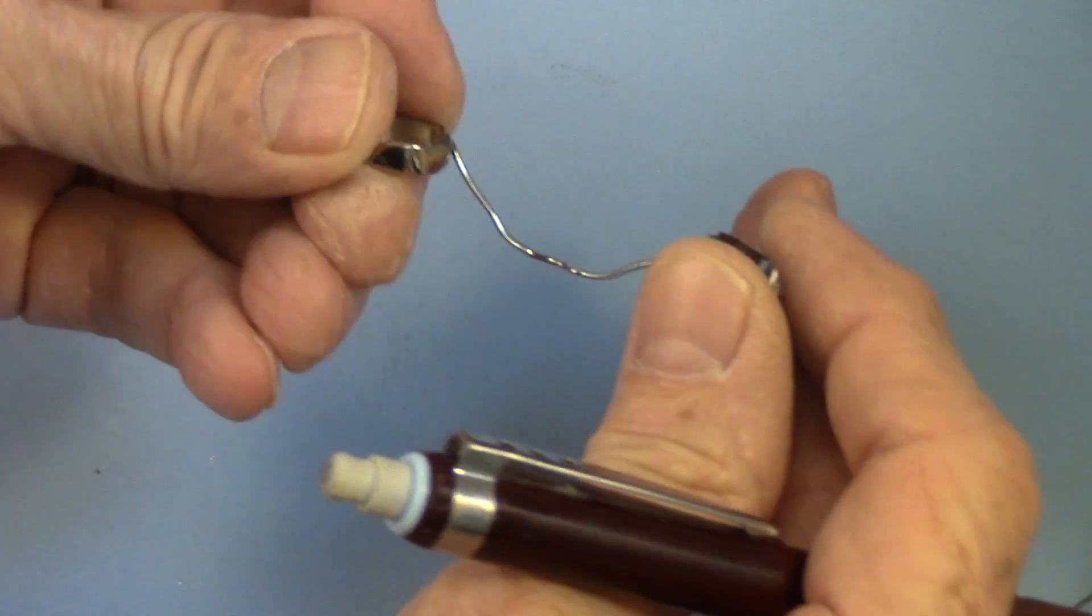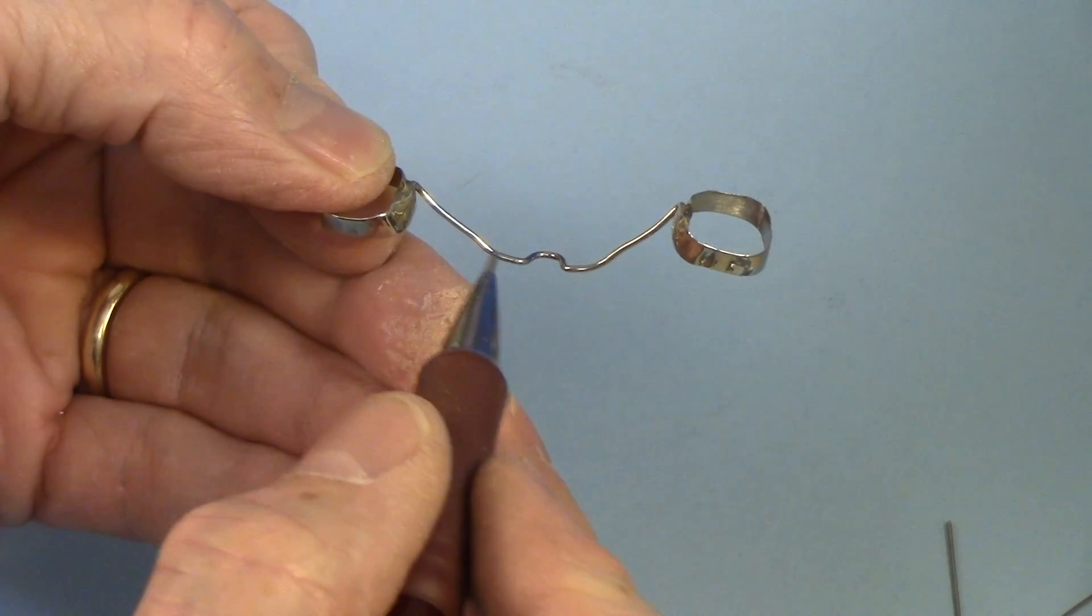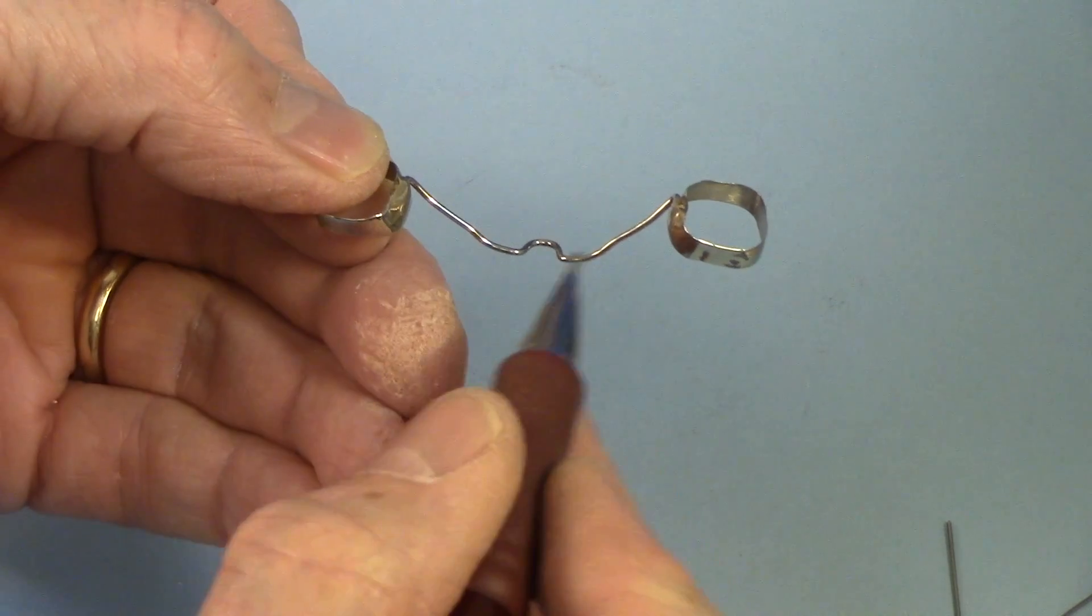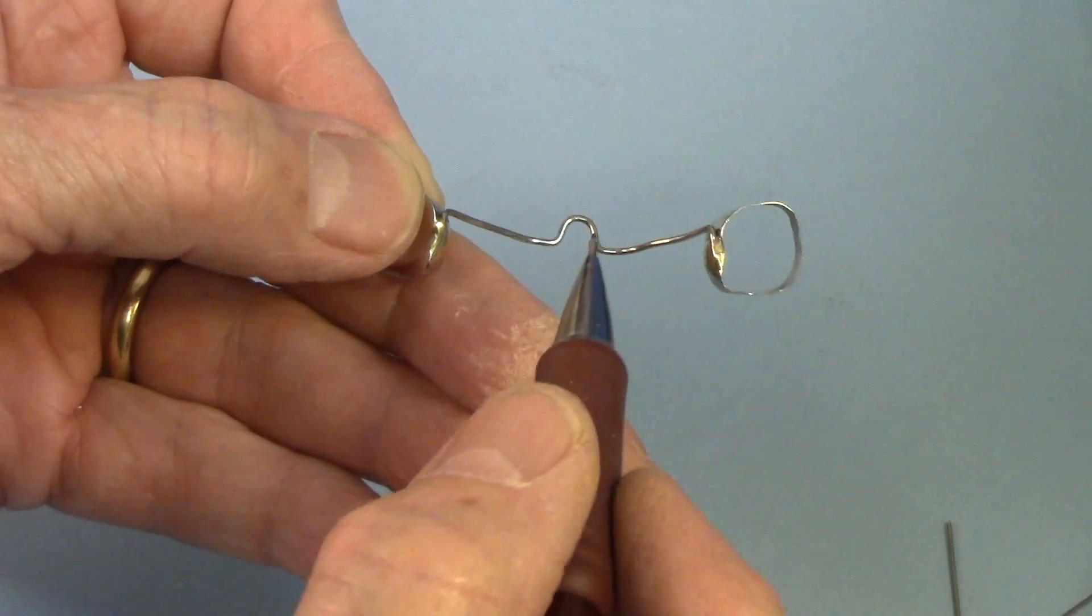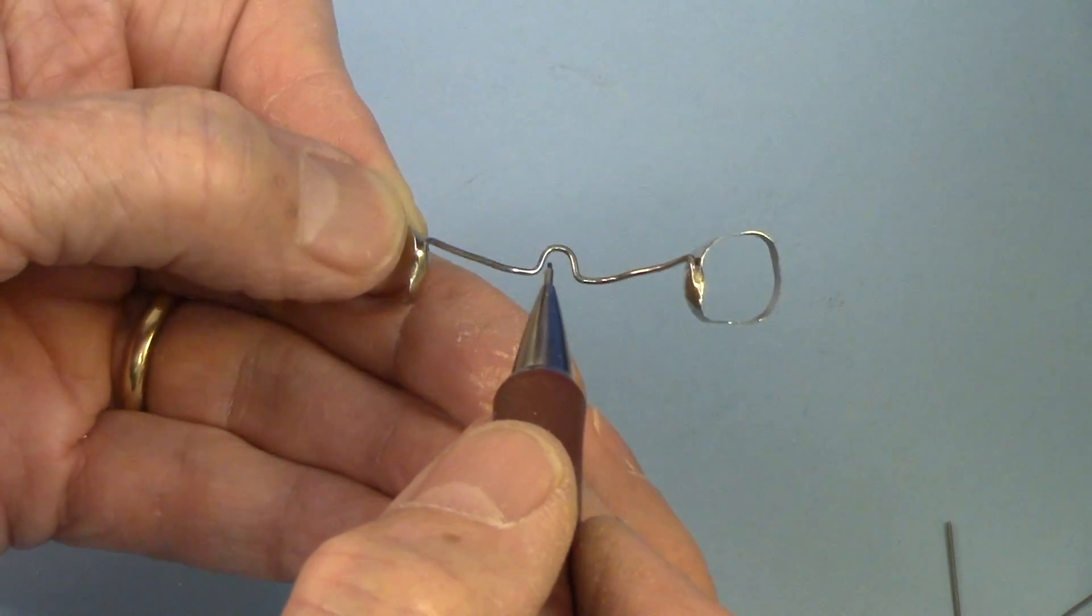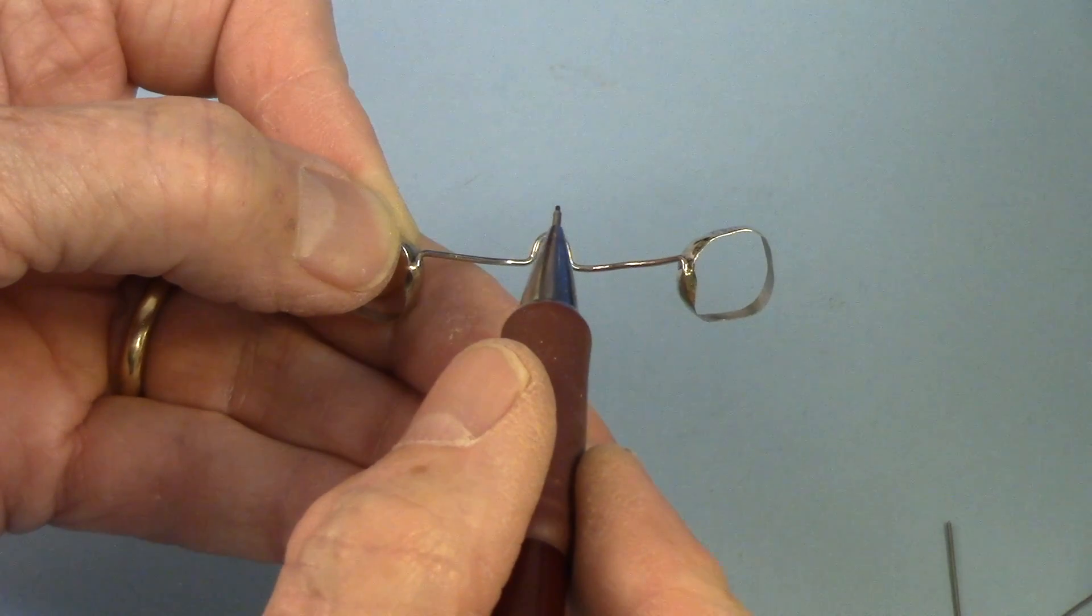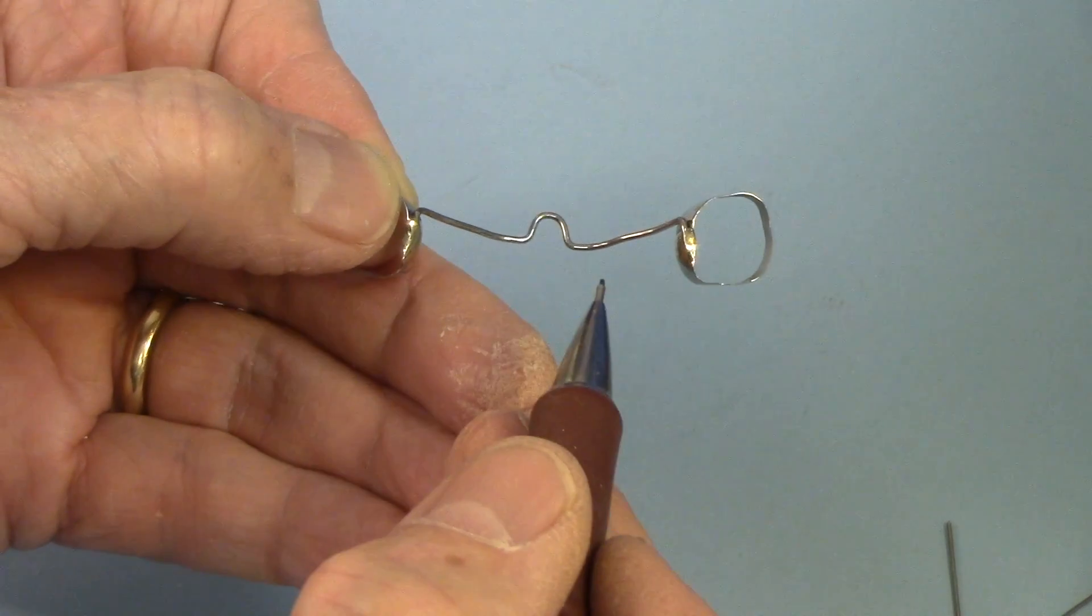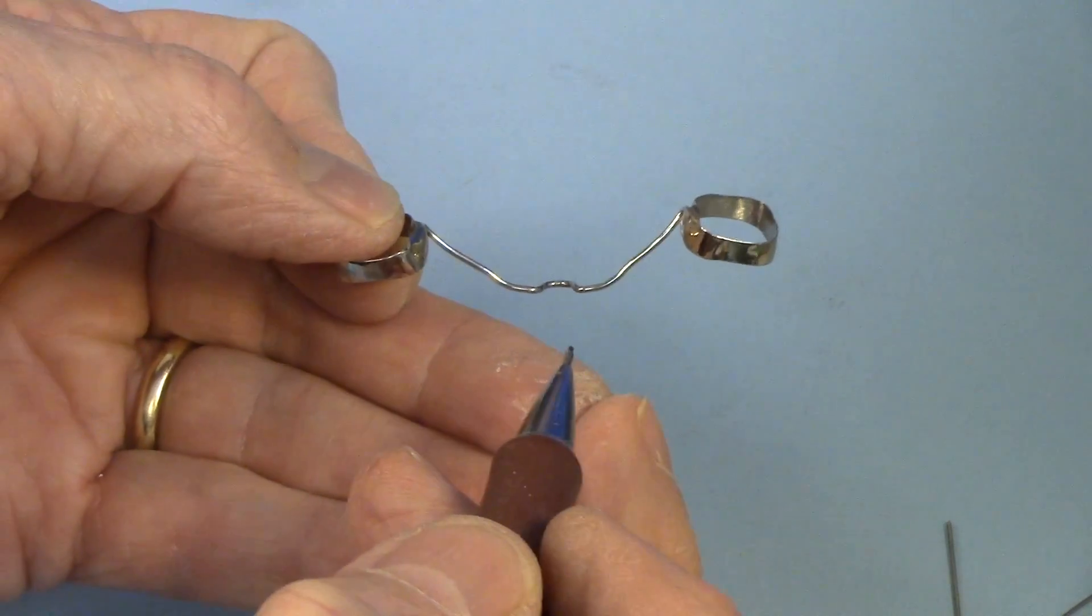If you've got something like a trans-palatal arch, it goes across the upper. If it's for just holding the arch, you can use like a half or three-quarter temper. But if you're going to use it to expand, like a lot of times, this will have extensions that go along the lingual of the bottom. And this loop will be more like an Omega shape here. So that the doctor can adjust it to cause expansion. If that's going to be the case, you need to get the more springy tempered wire.